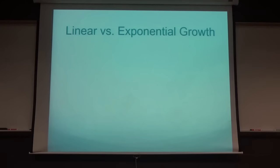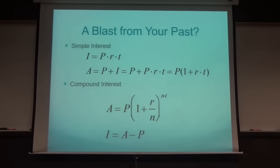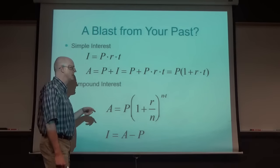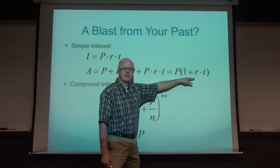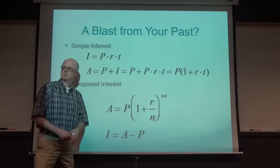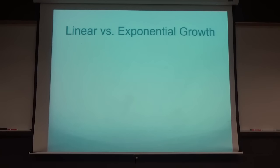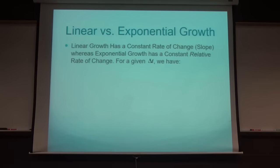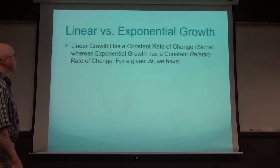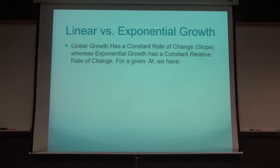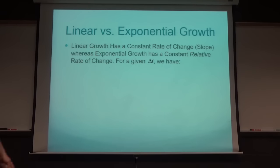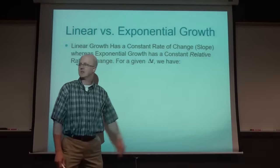When comparing simple interest versus compound interest, thinking of these things as functions of T: it's really linear growth versus exponential growth. Simple interest is a linear function of T; compound interest is an exponential function of T. Linear growth has a constant rate of change or slope, whereas exponential growth has a constant relative rate of change.